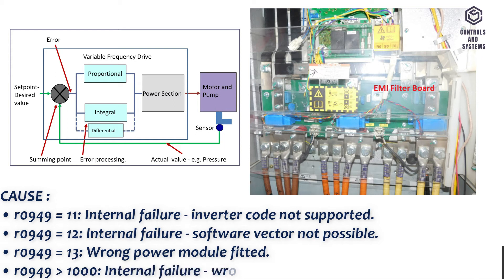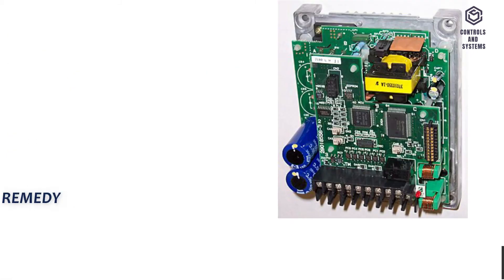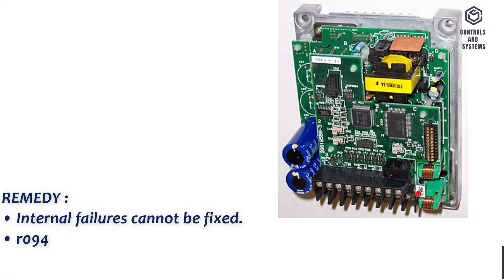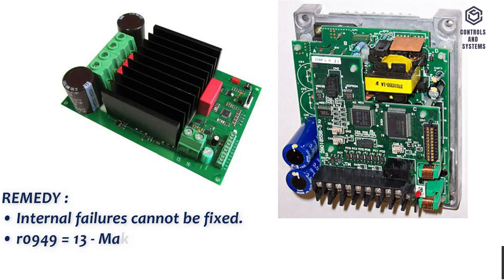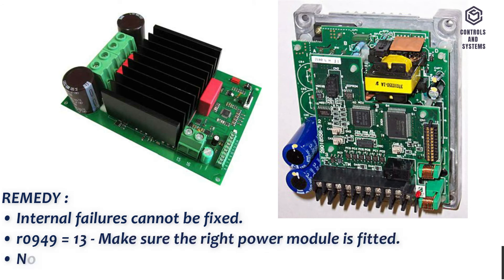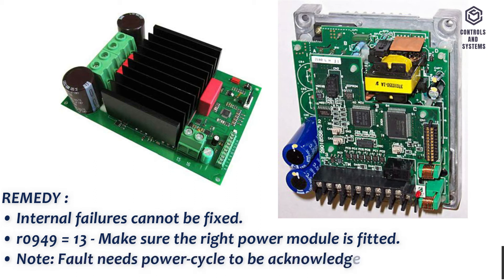R0949=1000: internal failure, wrong IO board fitted. Remedy: internal failures cannot be fixed. For R0949=13, make sure the right power module is fitted. Note: this fault needs a power cycle to be acknowledged.